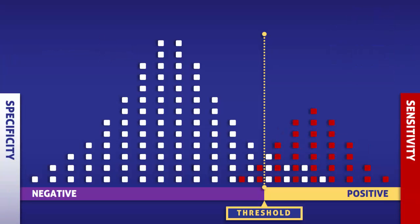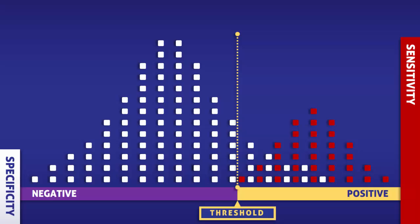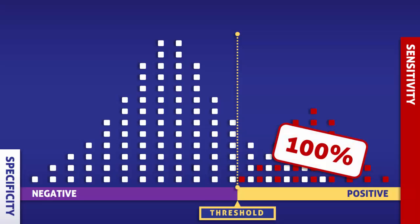If we were to change the threshold for a positive test, then the specificity and the sensitivity of the test would also change. By shifting the threshold to the left, we can obtain 100% sensitivity. This means that with this test, the condition would be detected in every person who has it. Because of the high sensitivity, this test could be used as a screening test.